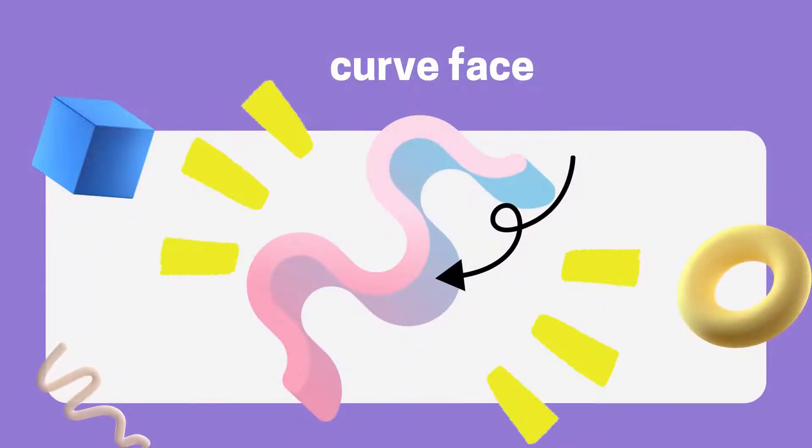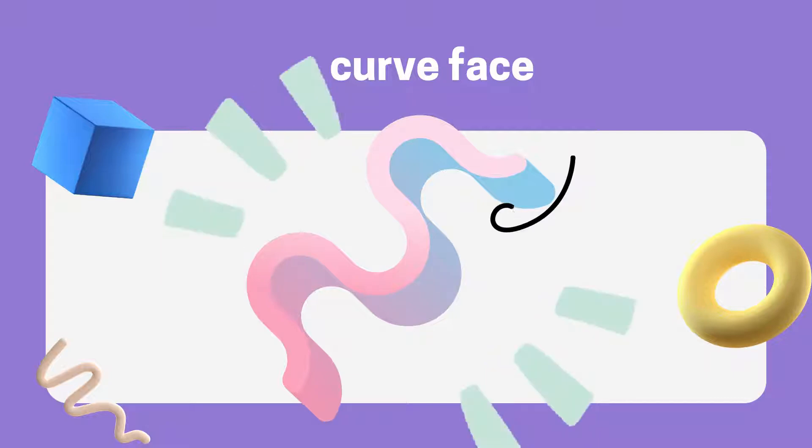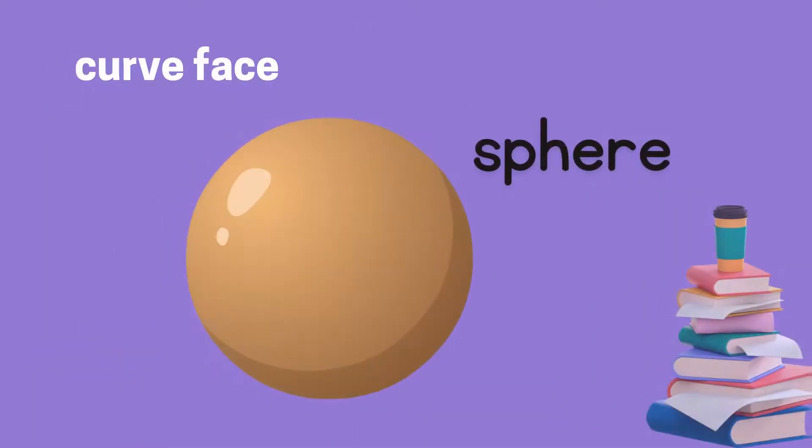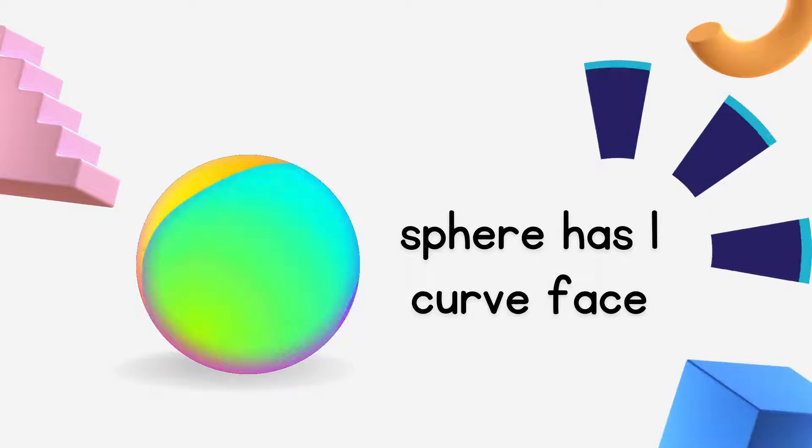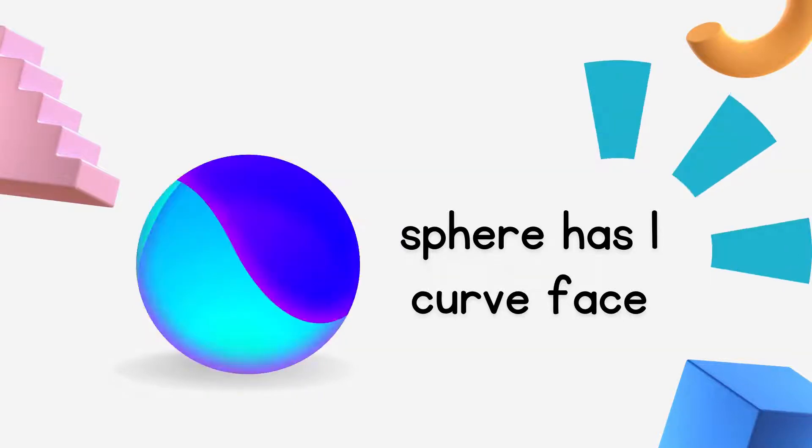Alright, now let's have a look at Curve Face. We are going to have a look at Curve Face. Sphere has Curve Face. Sphere has Curve Face. There is 1 Curve Face on Sphere. So, Sphere has 1 Curve Face.